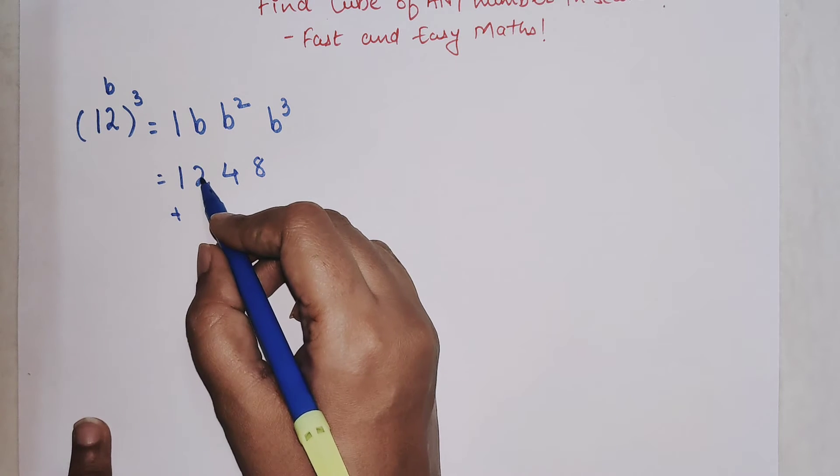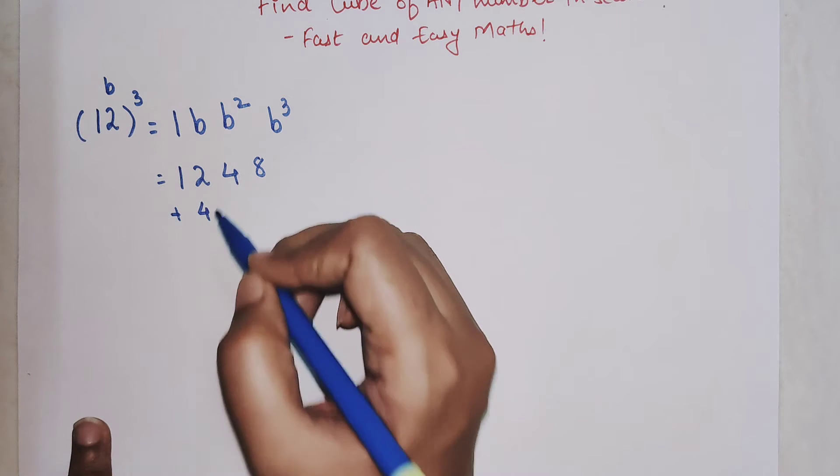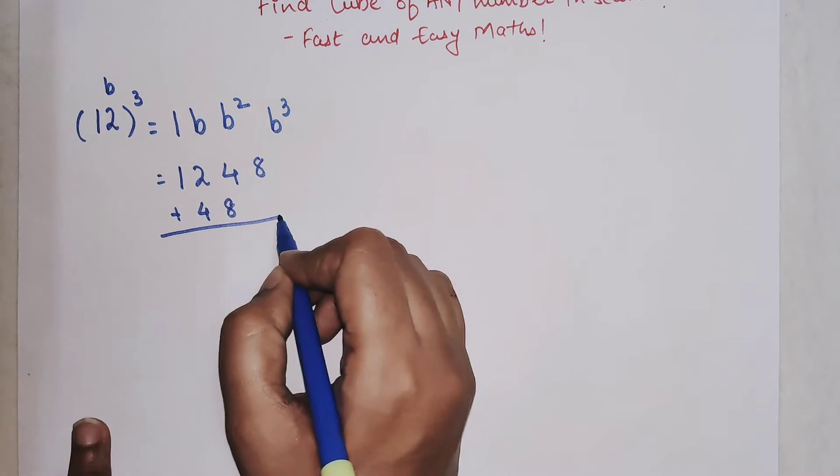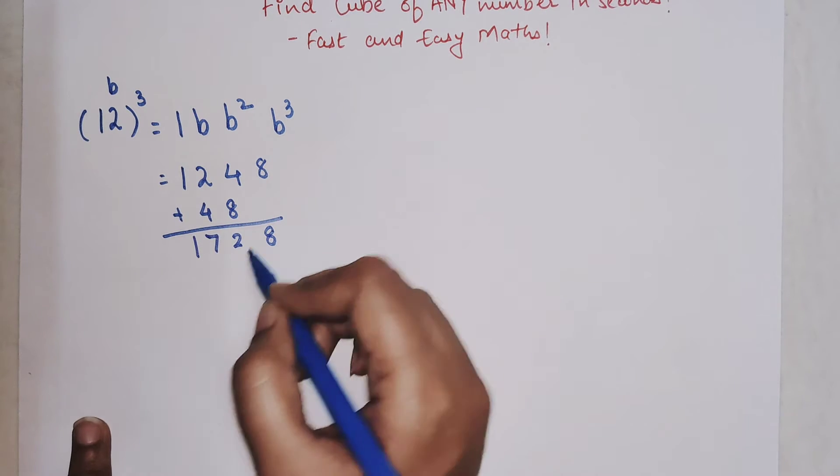So this number is two, so doubling it will get you four, and doubling four will get you eight. Just add this, so you will get eight, twelve, one carry seven and one.